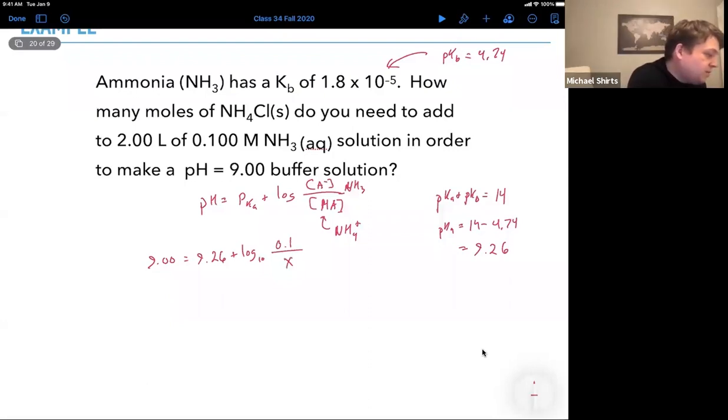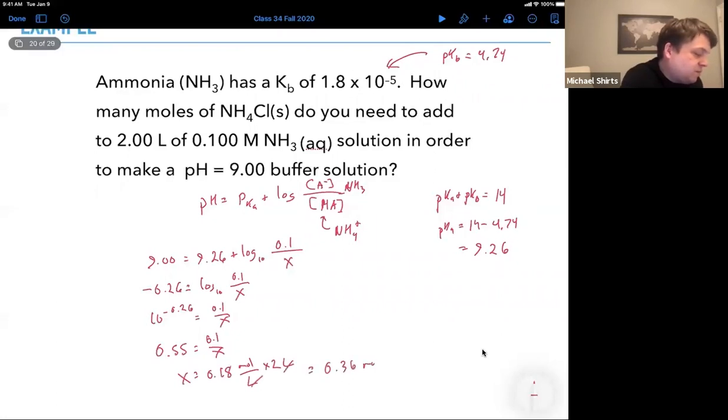So we can just start solving this. We only have one unknown, so this shouldn't be too bad. We've got minus 0.26 is equal to log base 10 of 0.1 over X. But we can just take both sides to the power of 10. That would give 10 to the 0.26 is equal to 0.1 over X, or 0.55 is equal to 0.1 over X. And that means that X equals 0.18 moles per liter.